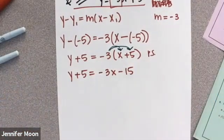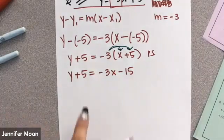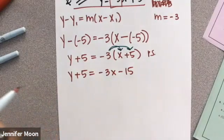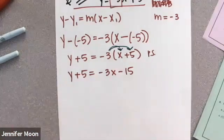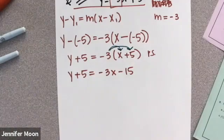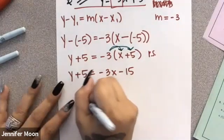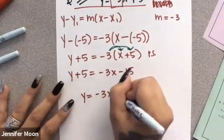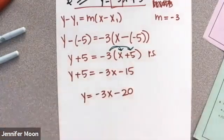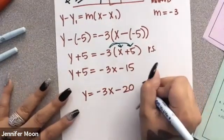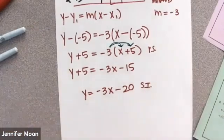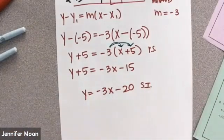And then I'm still not done. I want Y equals and I've got Y plus 5 equals. So I've got to get rid of that plus 5. You would do the inverse, the opposite. So I'm going to subtract 5 from both sides. And I get Y equals negative 3X negative 20. So this is my slope-intercept form. That is my equation of the line. Now let me show you this.